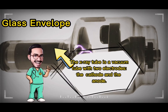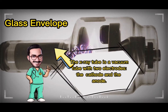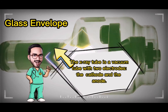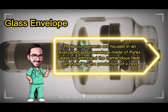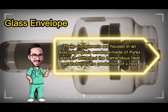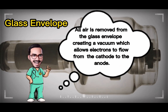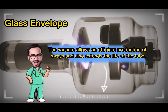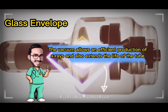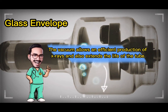The x-ray tube is a vacuum tube with two electrodes, the cathode and the anode. These components are housed in an evacuated glass envelope made of Pyrex glass, to withstand the tremendous heat generated by x-ray production. All air is removed from the glass envelope, creating a vacuum which allows electrons to flow from cathode to anode and enables efficient production of x-rays, also extending the life of the tube.